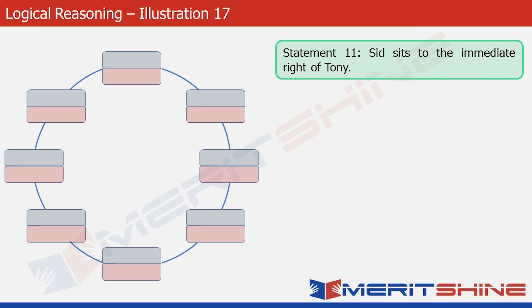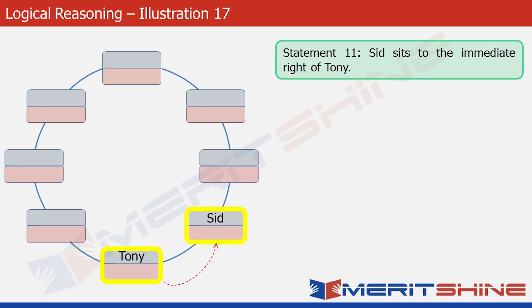Statement 11 says that Sid sits to the immediate right of Tony. We can pick any two adjacent boxes in the structure, so let's pick these two and place Tony and Sid here. Since all of them are facing the centre of the table, you can clearly see that Sid is to the right of Tony. Let's look at statement 6 now.